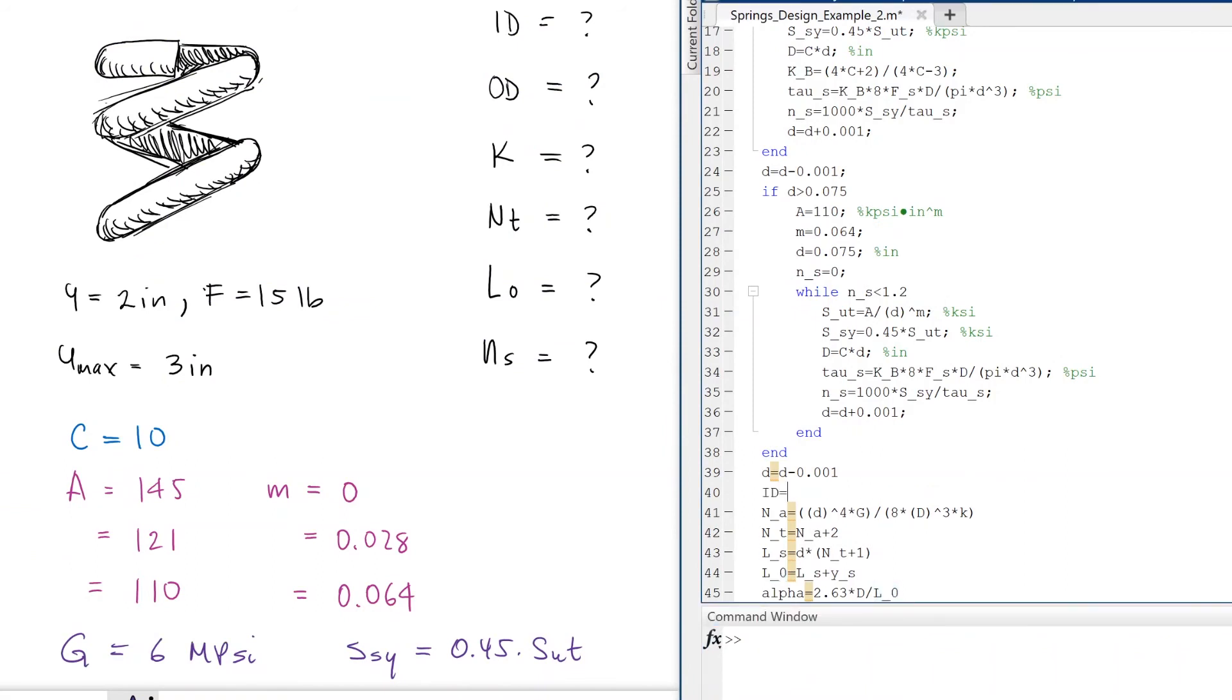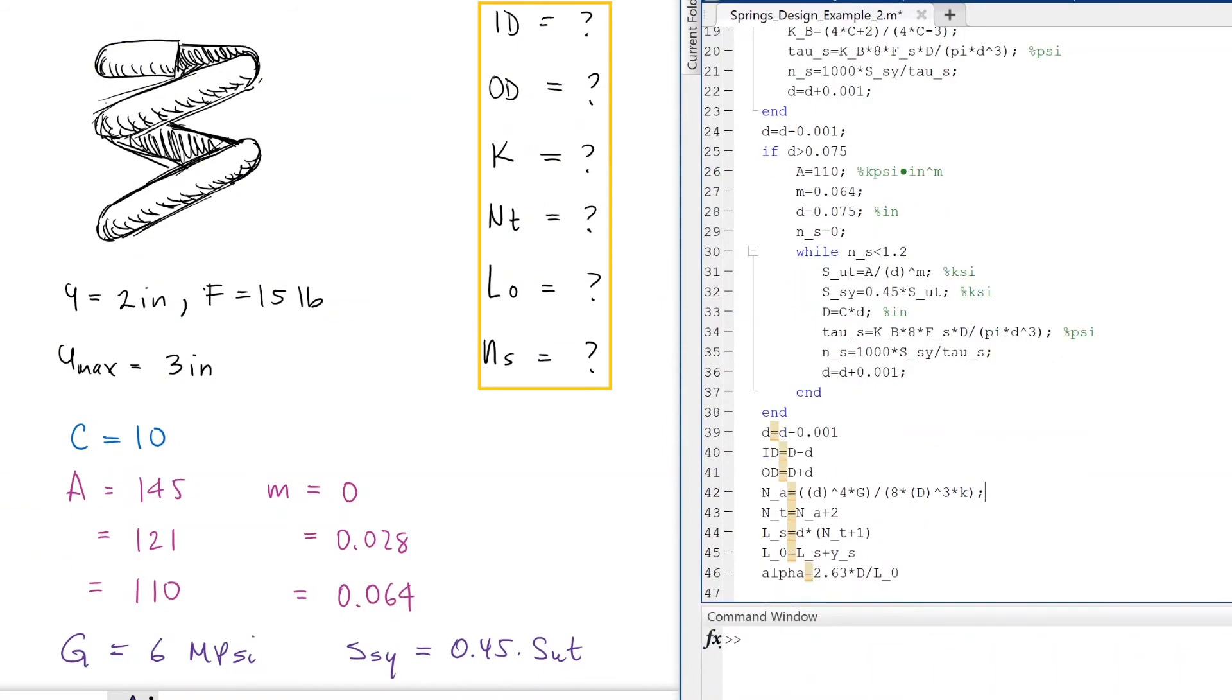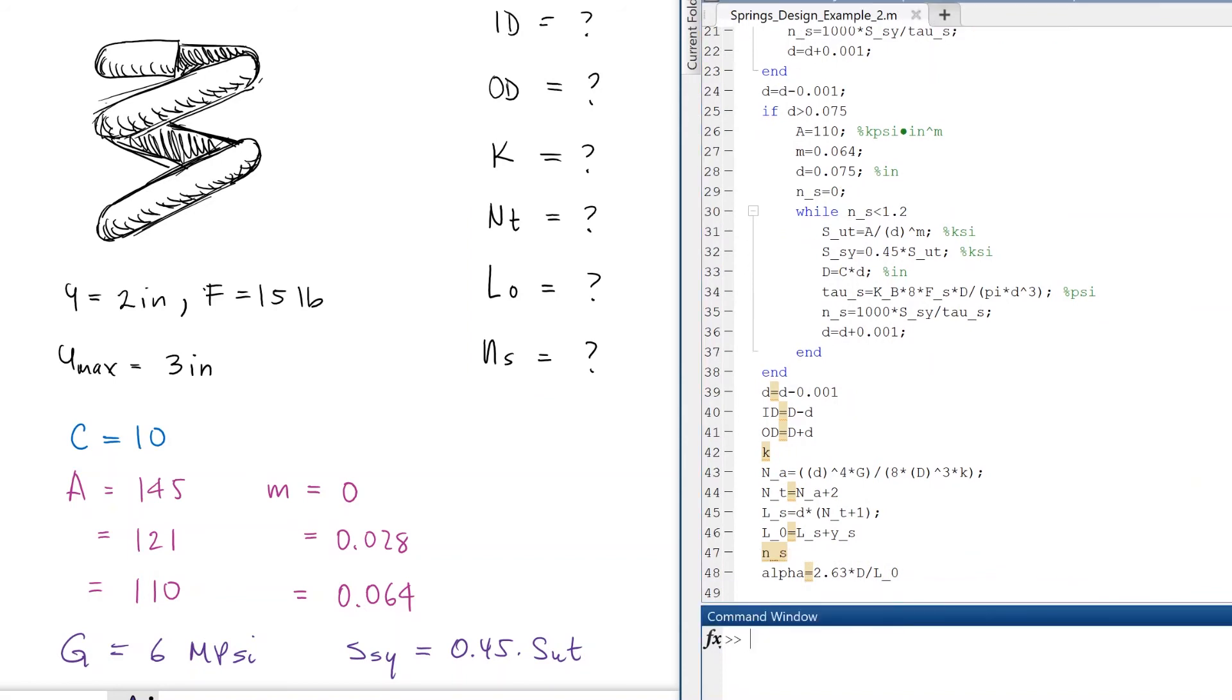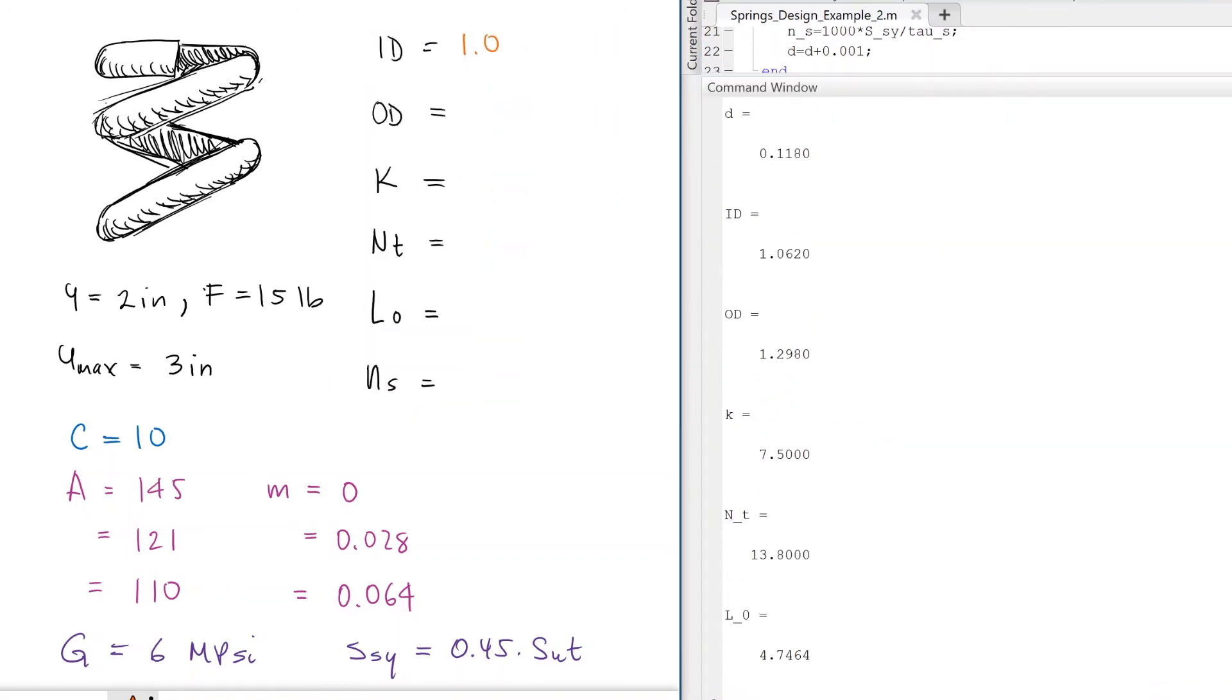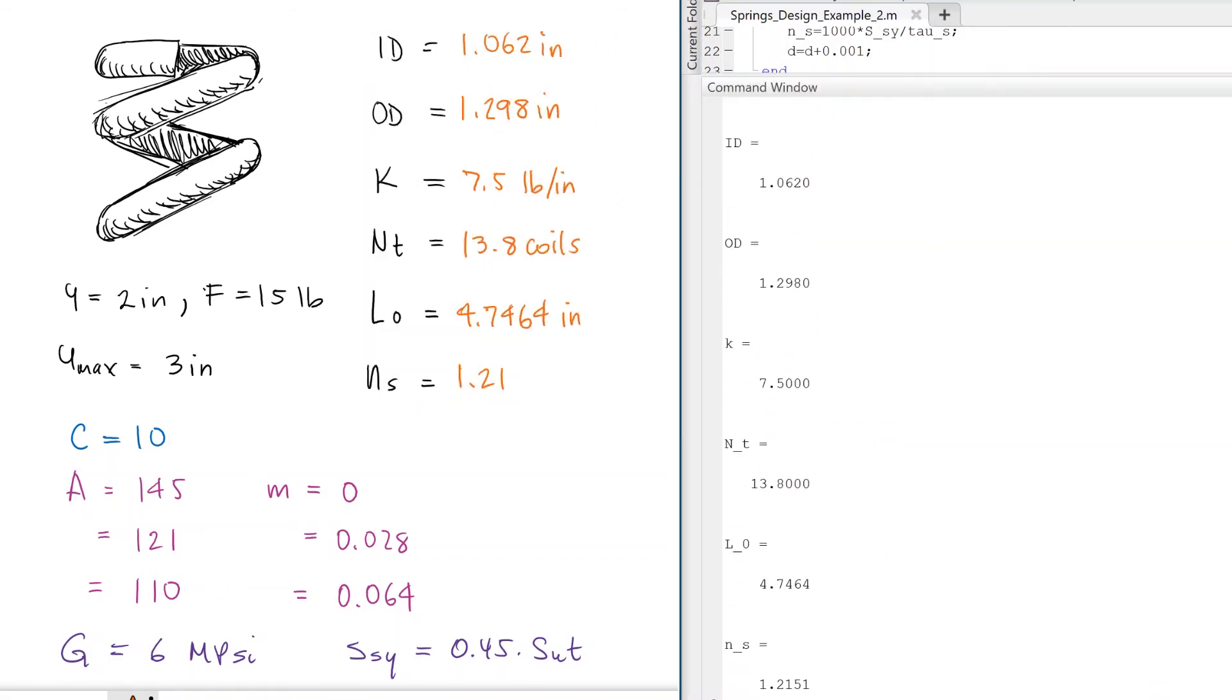Finally, we make sure that our code will show the values of the variables that we need to report. We run the code and we report all the parameters of our design. Since all of our restrictions are met, we can say that our design is finalized.